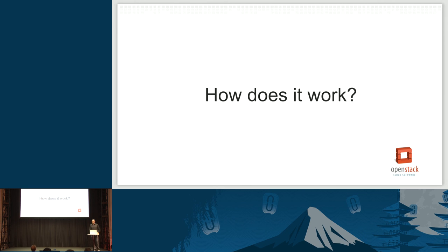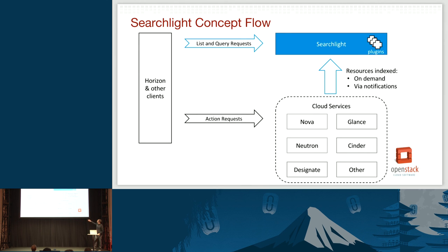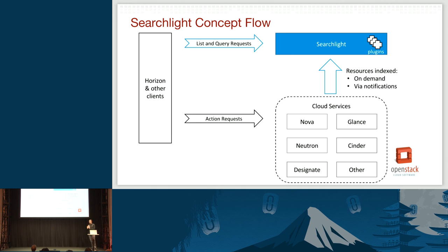Let's talk about how this actually works. Your cloud services — Nova, Glance, Designate — are indexed into Searchlight via a set of plugins. We have a plugin for Nova servers that can be indexed on demand; I can simply say 'go index all my servers' and it fits that into Elasticsearch. We also consume notifications, so incremental updates are pulled in as they happen. For action requests — like asking Nova to create a server — Nova emits a notification event that gets consumed by Searchlight and indexed into Elasticsearch.